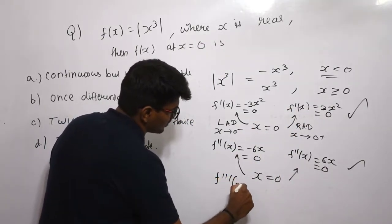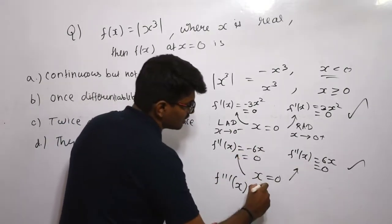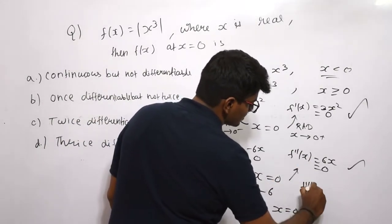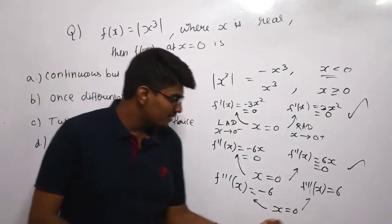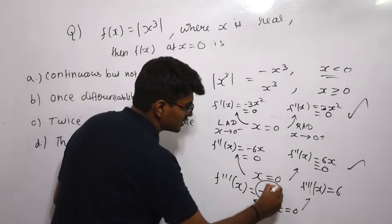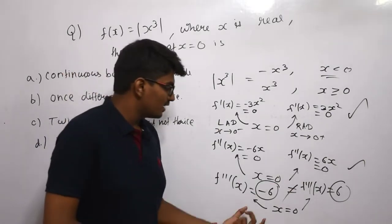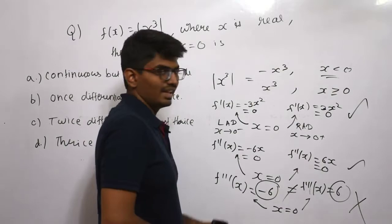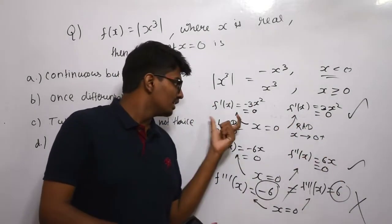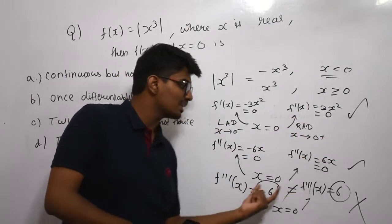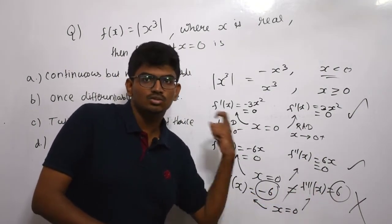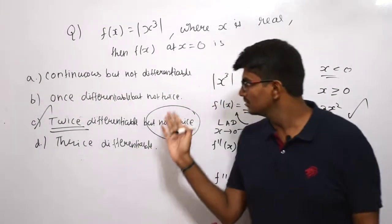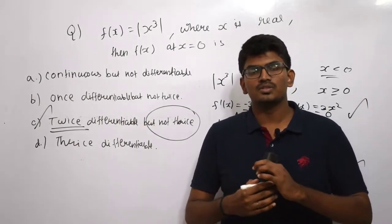Now differentiating a third time: f'''(x) = −6 on the left side and f'''(x) = 6 on the right side. Even without substituting x = 0, −6 ≠ 6, so the left-hand derivative is not equal to the right-hand derivative. Therefore |x³| is only differentiable twice but not thrice. The answer is option C. This is a very interesting problem — understanding it will be very useful for other differentiability problems.